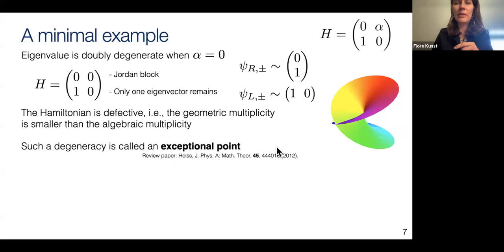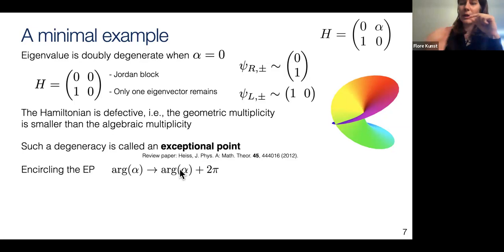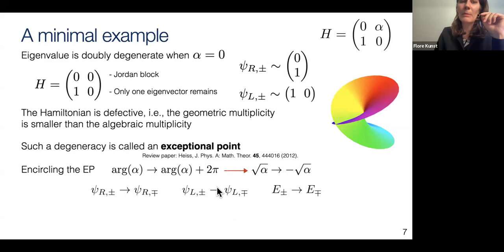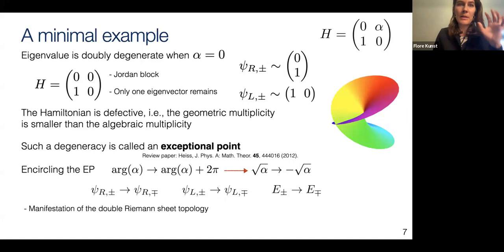If you encircle an exceptional point, something very interesting happens. Writing the argument of alpha and going around — adding 2π — you see that the square root of alpha goes to minus the square root of alpha. So I have flipped the eigenvalues and also the eigenstates. Starting in one eigenstate, going around once, you end up in the other eigenstate. This is a truly non-Hermitian effect: you have to go around twice to return to the starting point. This is a manifestation of the double Riemann-sheet topology.